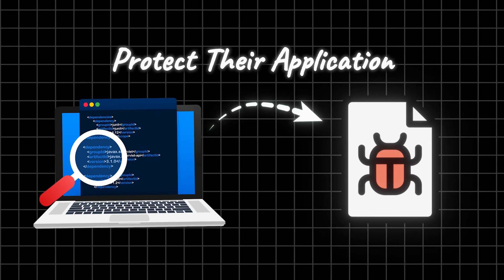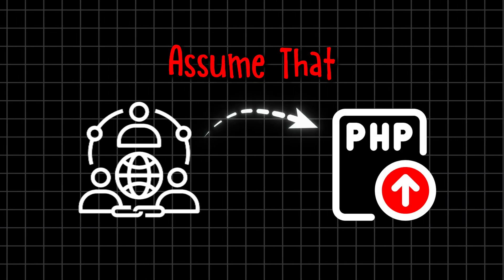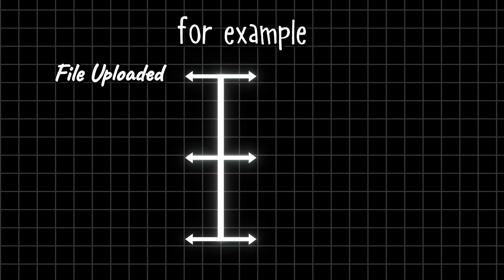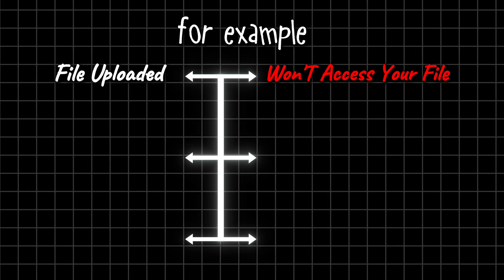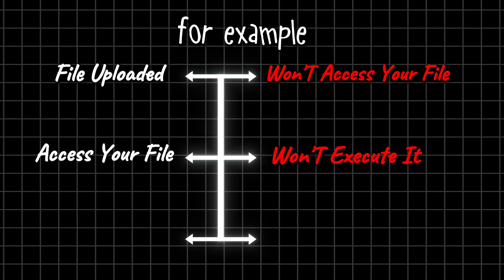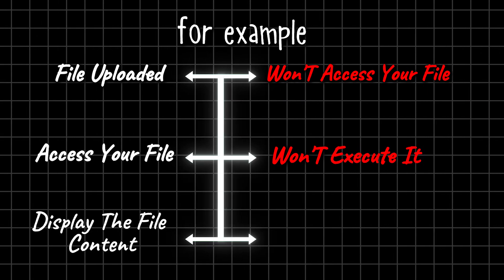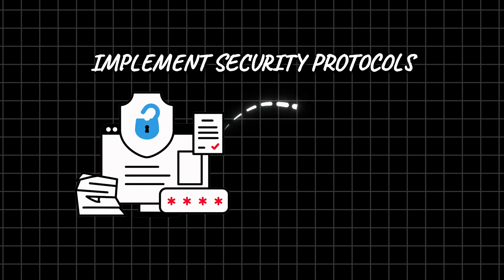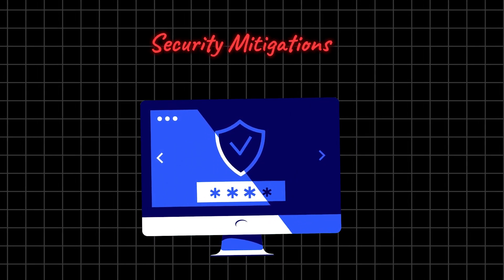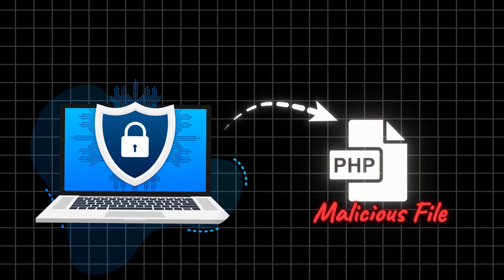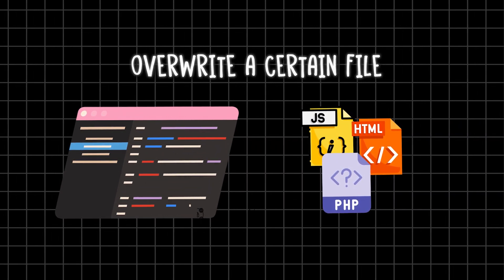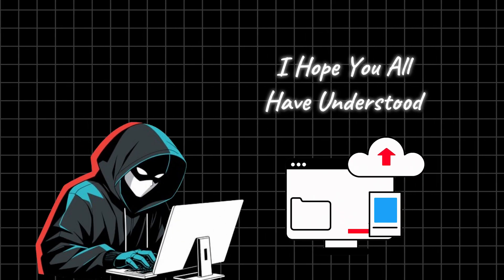Assume we are dealing with this kind of situation. Normally if you try to upload a malicious PHP file, the file will be uploaded but you won't be able to access it. Even if you can access it, you still won't be able to execute or render it — it will just display the file content as-is without actually getting rendered. These are some of the ways developers implement security in these applications. But if these security mitigations are not properly implemented, this can result in an interesting vulnerability allowing us to not only execute malicious files but also overwrite certain files to do a lot more.